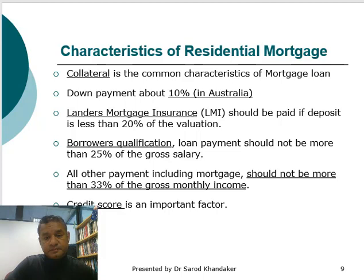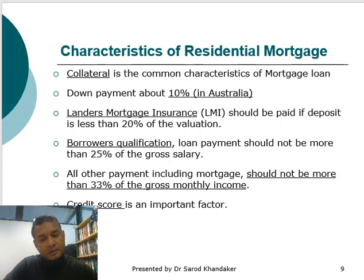Borrower qualifications are another important factor. The loan repayment should not be more than 25% of gross salary, and all other payments including the mortgage should not be more than 33% of monthly income. The bank will look at all these factors and check the credit score of the borrower, which is another important factor.